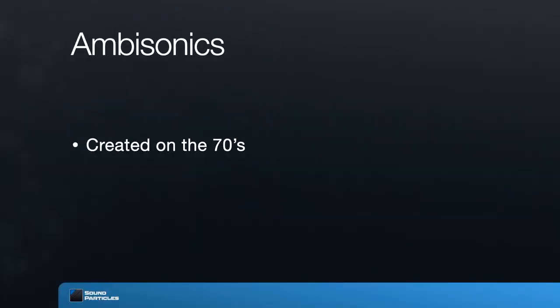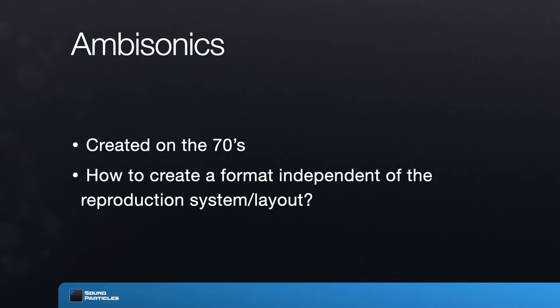Now let's talk about Ambisonics. Ambisonics was created in the seventies — about 50 years ago. The idea was to create a format that would allow recording to be independent of the playback layout, so you could record something and then play it back in stereo, 5.1, eight equal speakers, a cube with eight speakers, or any other configuration. The most famous format is first-order ambisonics, which has four channels.